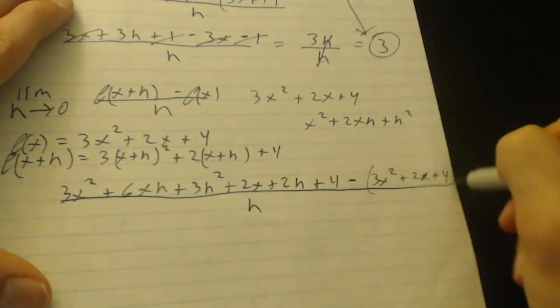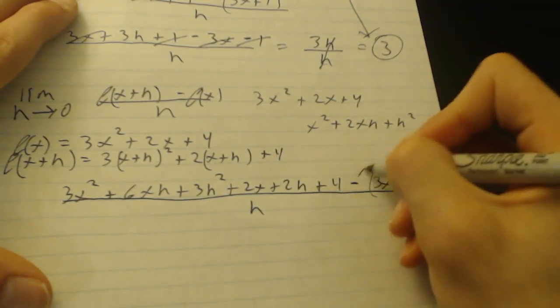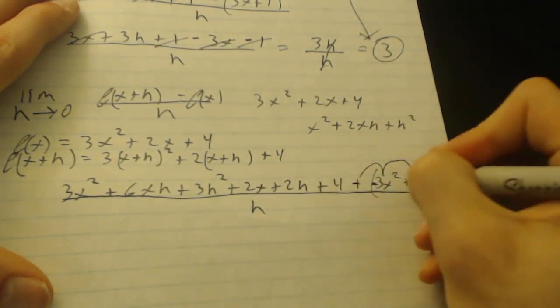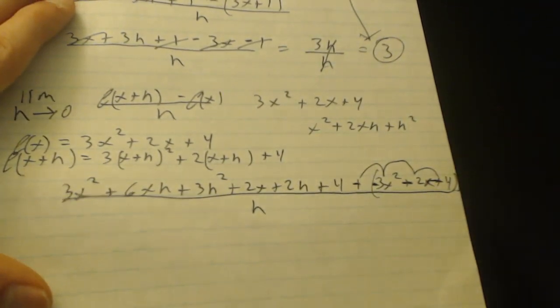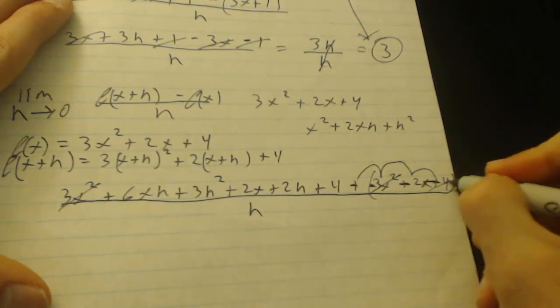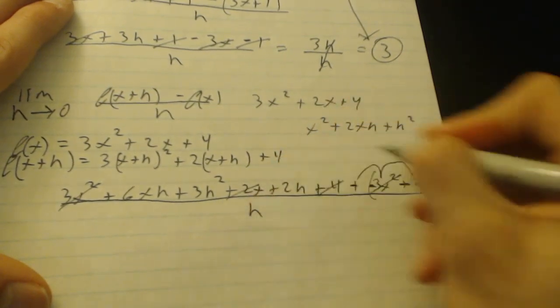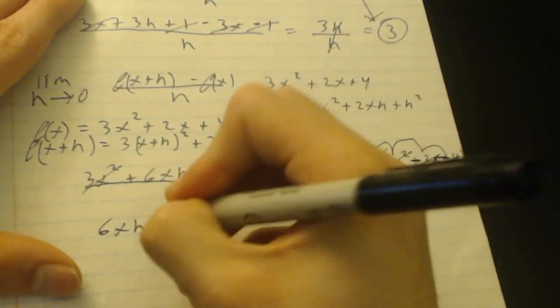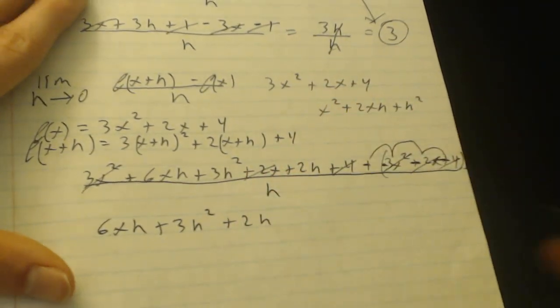Alright, don't forget the parentheses. Let's see, remember to distribute. Now we're going to distribute the negative over this. This actually becomes plus, well, because the negatives cancel. Minus minus. Alright, so now this is the part where we cancel things. It looks like the 3x squared's are going to cancel. The 4's are going to cancel because this is a plus 4 or negative 4. And it looks like the 2x's are going to cancel. So we're left with 6xh plus 3h squared plus 2h all over h.